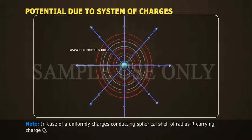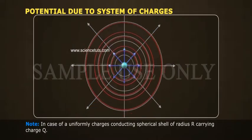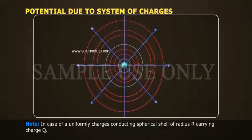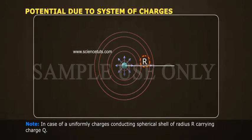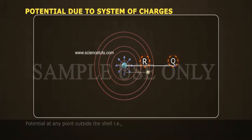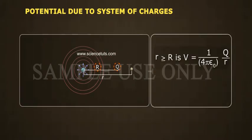Note: In case of a uniformly charged conducting spherical shell of radius R carrying charge q, potential at any point outside the shell, that is r greater than or equal to R, is V is equal to 1 by 4 pi epsilon naught q by r.